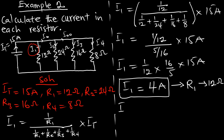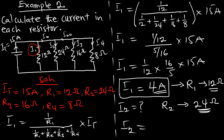For I2, R2 is 24 ohms — exactly double R1's 12 ohms. Since R1 = 12 Ω gave I1 = 4 A, doubling the resistance will halve the current, so I2 = 2 amperes. You can verify this using the full current divider formula and you will get the same result of 2 amperes.